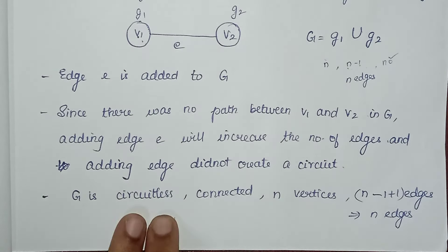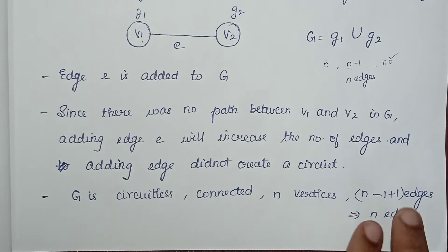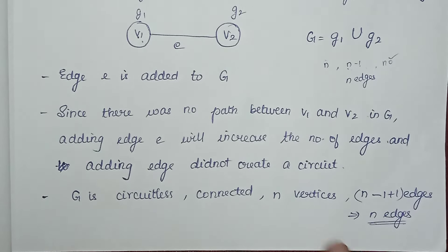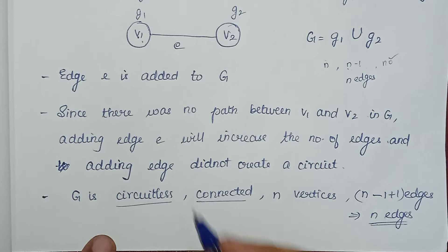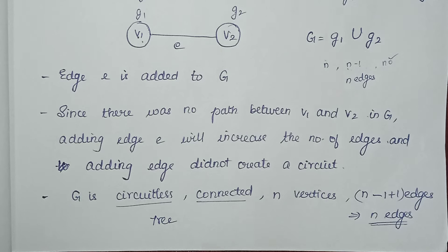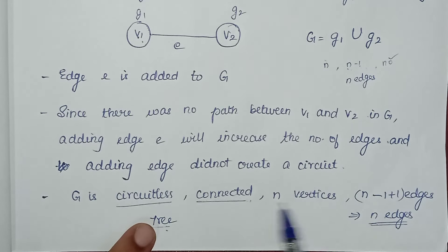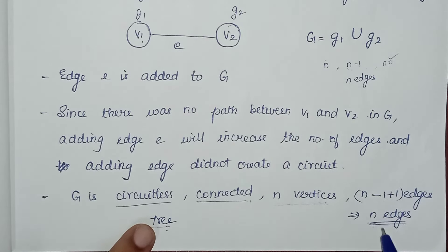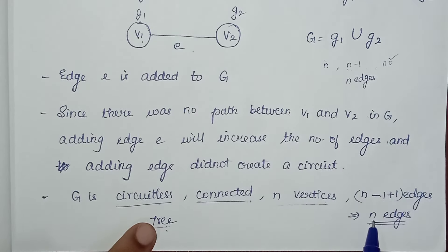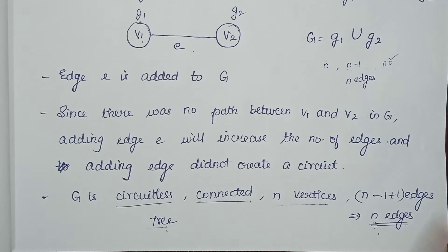So G is circuitless, connected, with n vertices and n edges. Now, the graph is circuitless and connected — what can you say? You can say it is a tree. Now, if you want to apply the theorem: a tree with n vertices is going to have n-1 edges. If a graph is circuitless and connected, it is a tree. So n vertices in the tree means n-1 edges. But if you want to add n edges, it is contradicting our theorem.